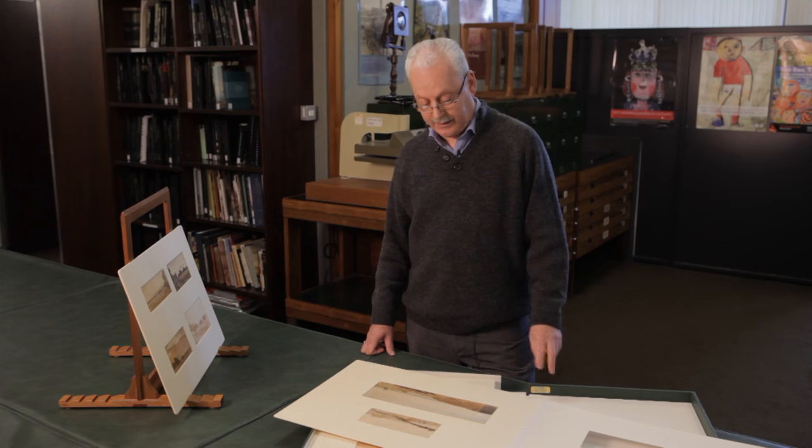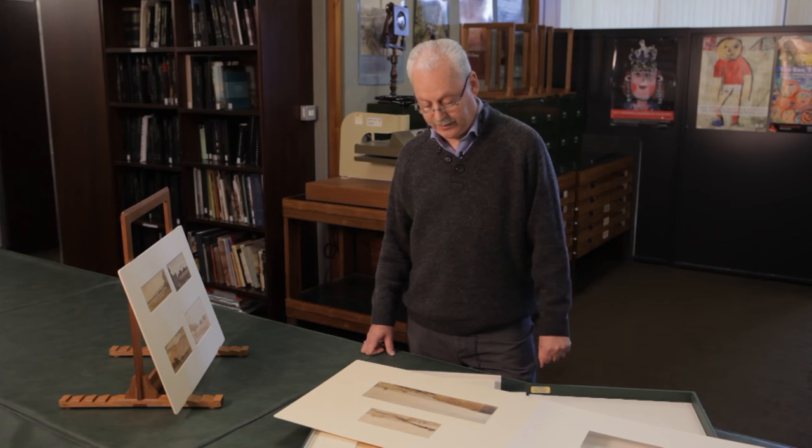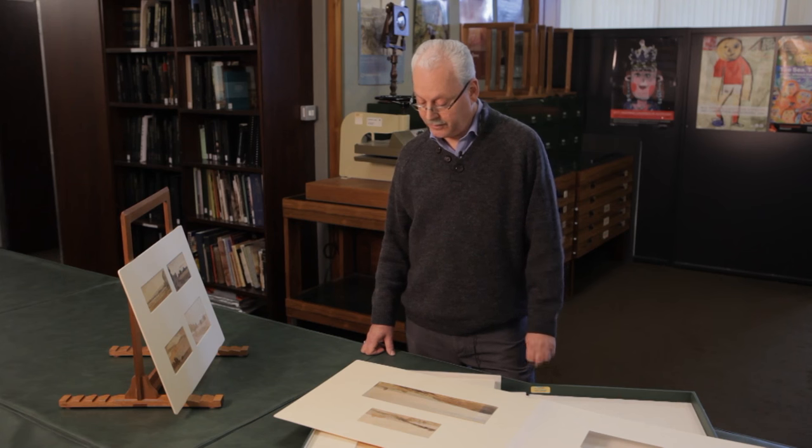We can see areas that have not been exposed to light and areas that have been exposed to light. You can see it quite clearly how the light has altered the tones of not only the paper but the watercolor pigment itself.